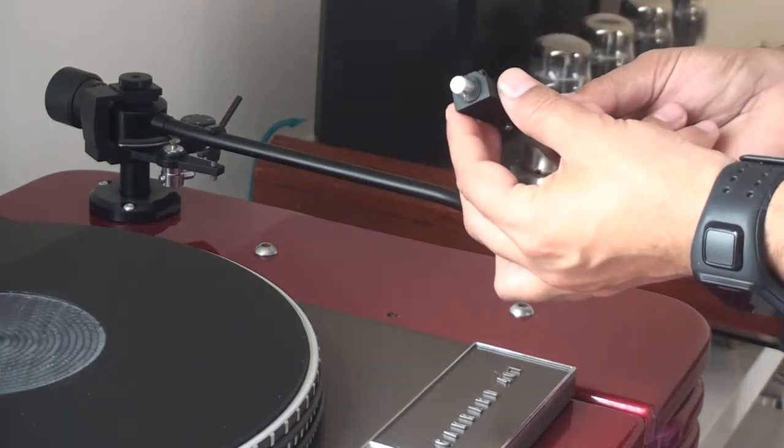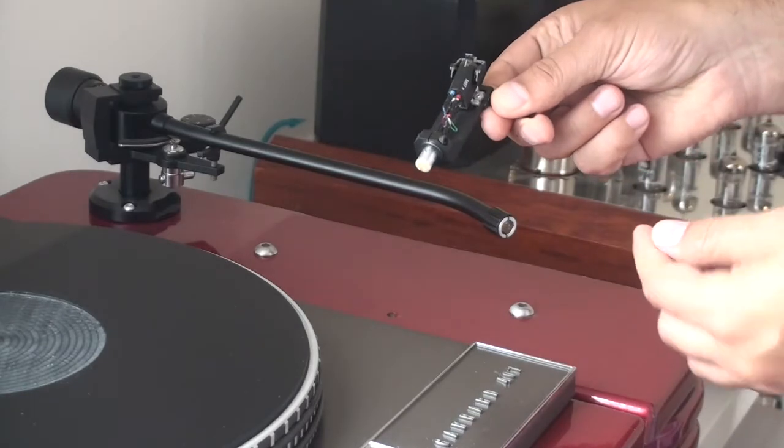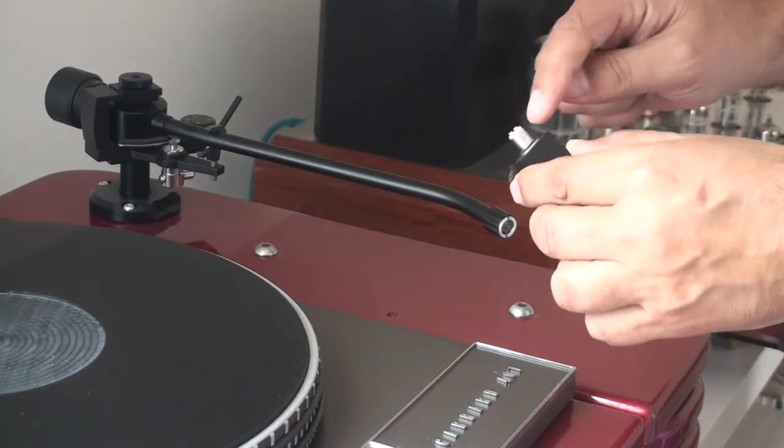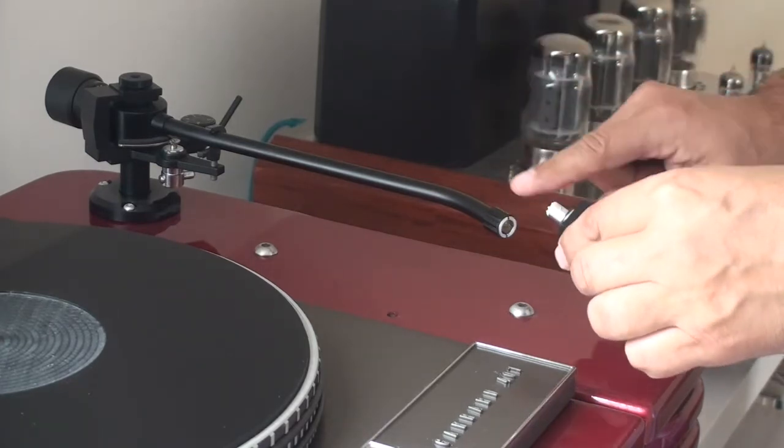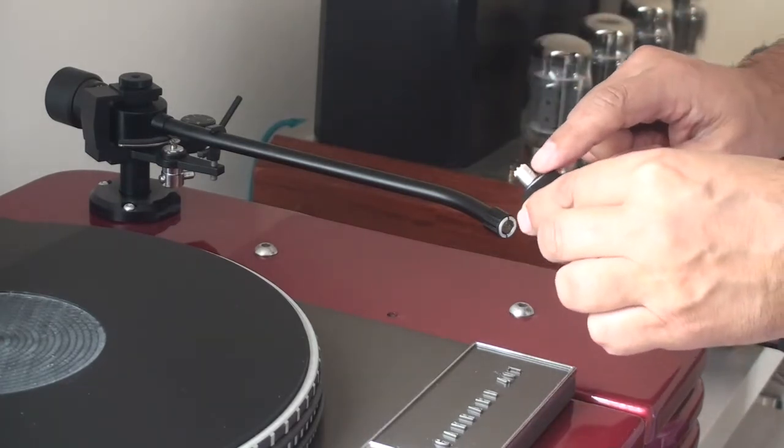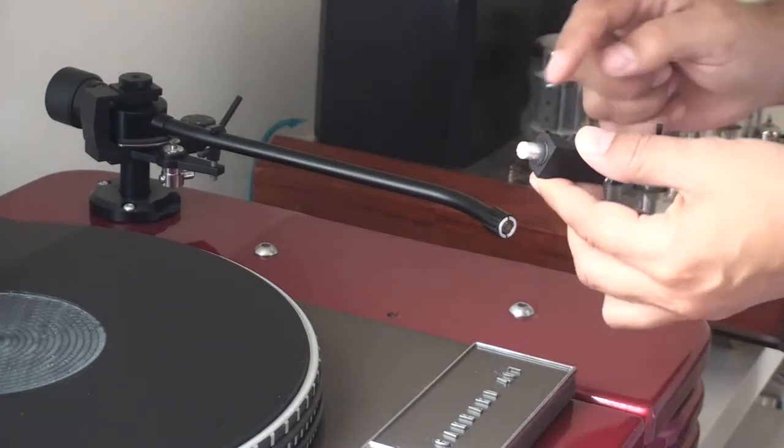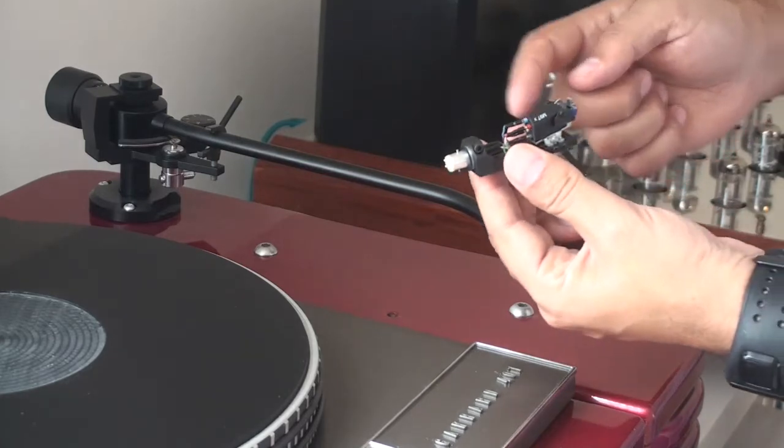This is the construct of the actual headshell itself. You've got the interface between the tone arm and the headshell here with these gold contacts, and you've got the main body of the headshell here.